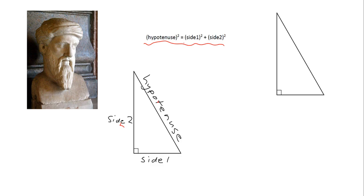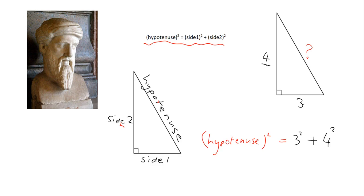Let me just give you an example. Say I've got here a triangle that has got sides of 3 and 4, and I want to figure out how long is the hypotenuse. Pythagoras tells me that my hypotenuse squared is equal to side one squared plus side two squared. So my hypotenuse squared is equal to 9 plus 16, and 9 plus 16 is 25. So my hypotenuse squared is 25, which means my hypotenuse will just be the square root of 25.